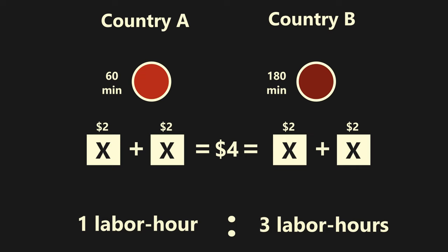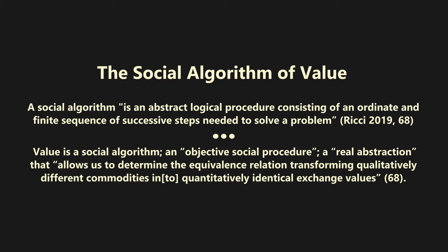Andrea Ricci, in his Value and Unequal Exchange in International Trade, argues that the best interpretation of the concept of value in Marx is that value is a social algorithm. Insofar as an algorithm is an abstract logical procedure consisting of an ordinate and finite sequence of successive steps needed to solve a problem, value is a social algorithm — an objective social procedure, a real abstraction that allows us to determine the equivalence relation transforming qualitatively different commodities into quantitatively identical exchange values. This algorithm is social because it occurs and is repeated on a structural scale that extends beyond the individual. The social algorithm of value establishes qualities of reflexivity, symmetry, and transitivity in commodity exchange.